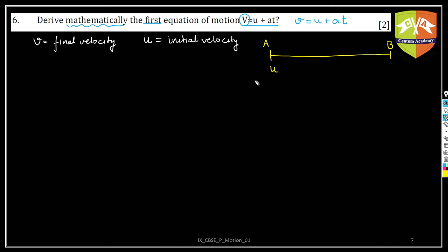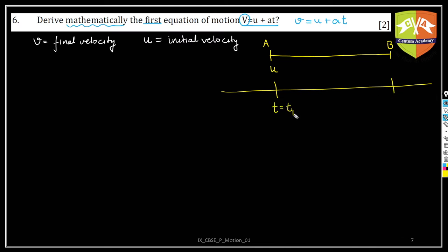When you started, your speed is u. This analysis considers a window — a time interval from t1 to t2. The motion was happening along a path, and I am analyzing your motion between these two times, from point A to point B.